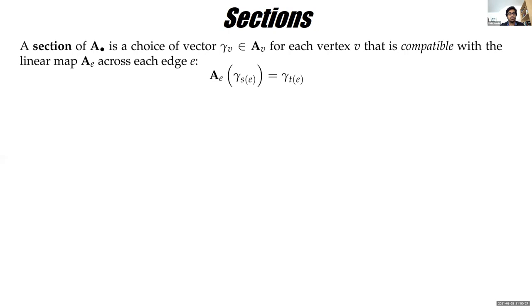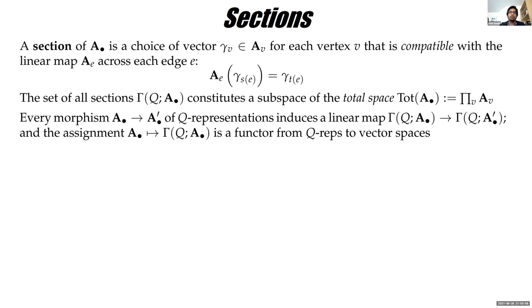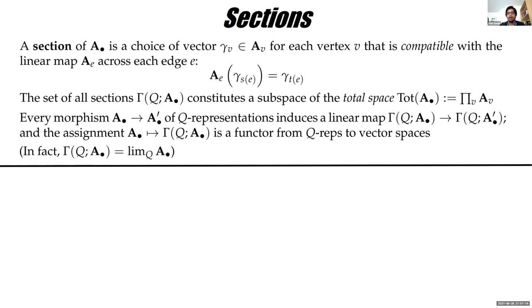What I want to talk about is a way to bypass decomposability — something about quivers that's computable and statistically approachable. The object of interest is a section: you pick a vector in every vector space such that the matrices send the chosen vector at the source to the chosen vector at the target. It's a compatible choice of vectors across the quiver. These sections live inside the total space — the direct product of all vertex vector spaces. A morphism of quiver representations induces a linear map of section spaces, making this a functor. Categorically, the section space is the limit of the diagram of vector spaces: the universal cone.